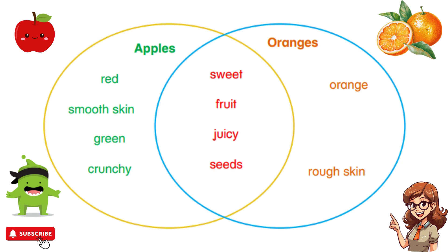In this example, the blue circle is for oranges and the yellow circle is for apples. You see they overlap in the middle, showing the things they have in common — like they are fruit, they are sweet, they have seeds. And in the parts that don't overlap are the characteristics that are unique to each, like oranges are orange and have brown skin, while apples can be red or green and are crunchy.